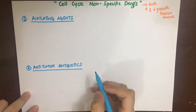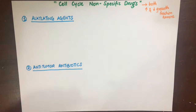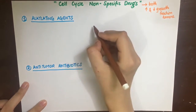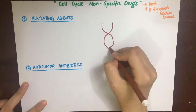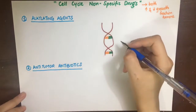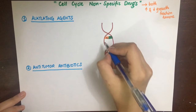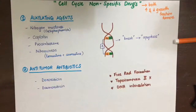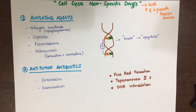Alkylating agents bind two guanine bases on DNA, leading to the formation of crosslinks, which result in broken DNA and arrest the cell cycle in any phase, leading to apoptosis or programmed cell death. Alkylating agents include nitrogen mustards such as cyclophosphamide, cisplatin, procarbazine, and nitrosoureas such as lomustine and carmustine.